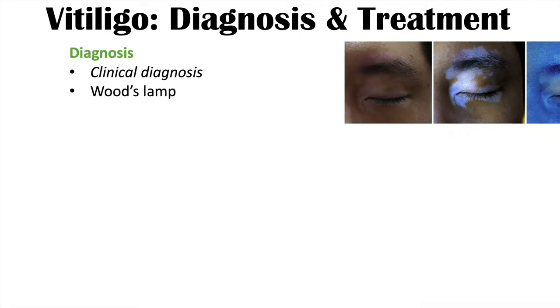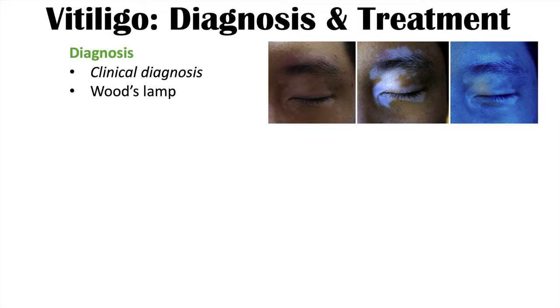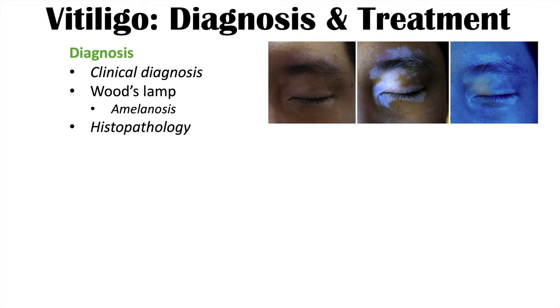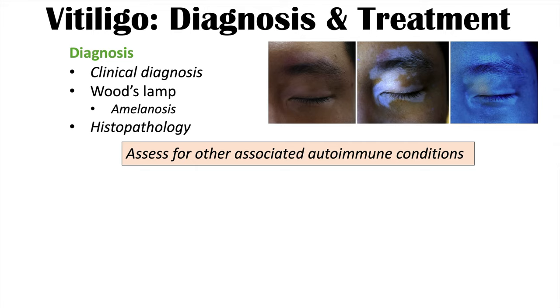The diagnosis of vitiligo is often clinical, based on the appearance of the skin lesions. In other cases, a Wood's lamp can be used to visualize the depigmented areas more clearly — it reveals amelanosis, meaning a lack of melanin. Histopathology of the depigmented skin would show a lack of melanocytes. Because vitiligo is associated with other autoimmune conditions, it's also important to assess for thyroid disease and pernicious anemia.